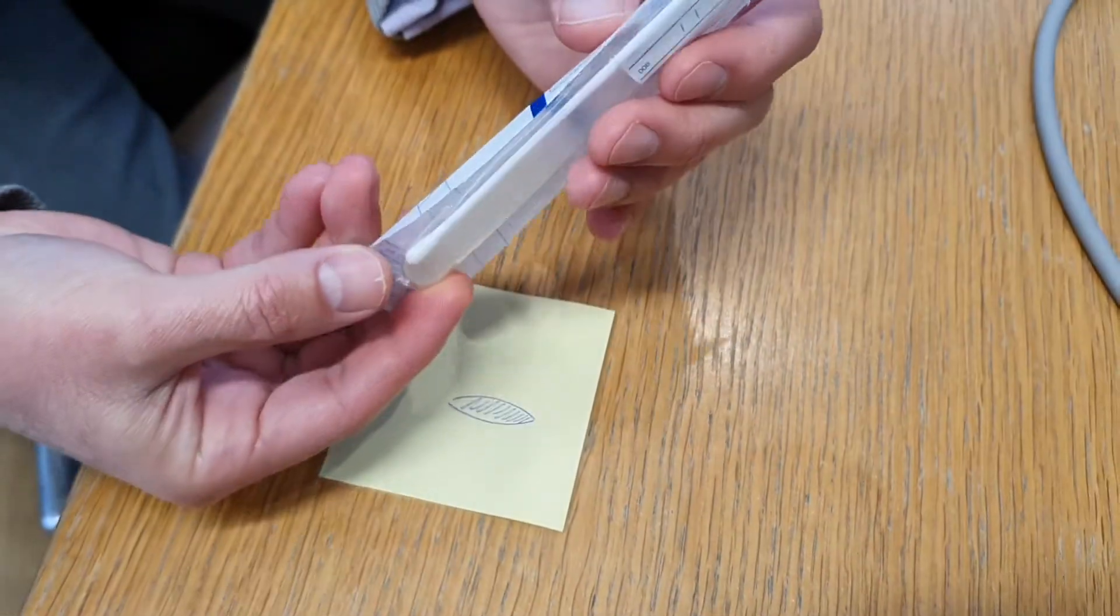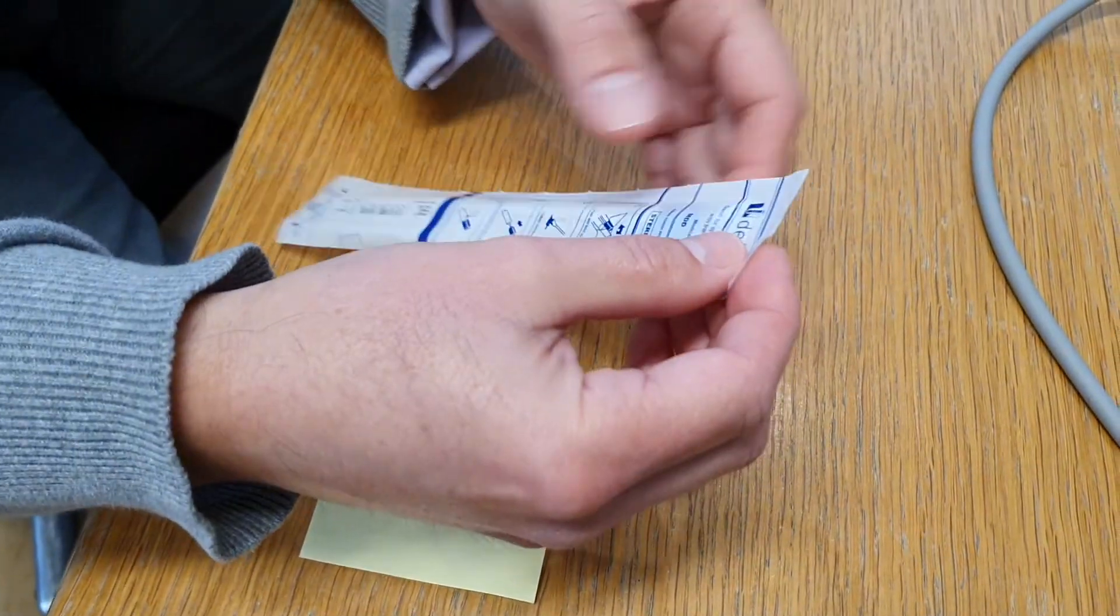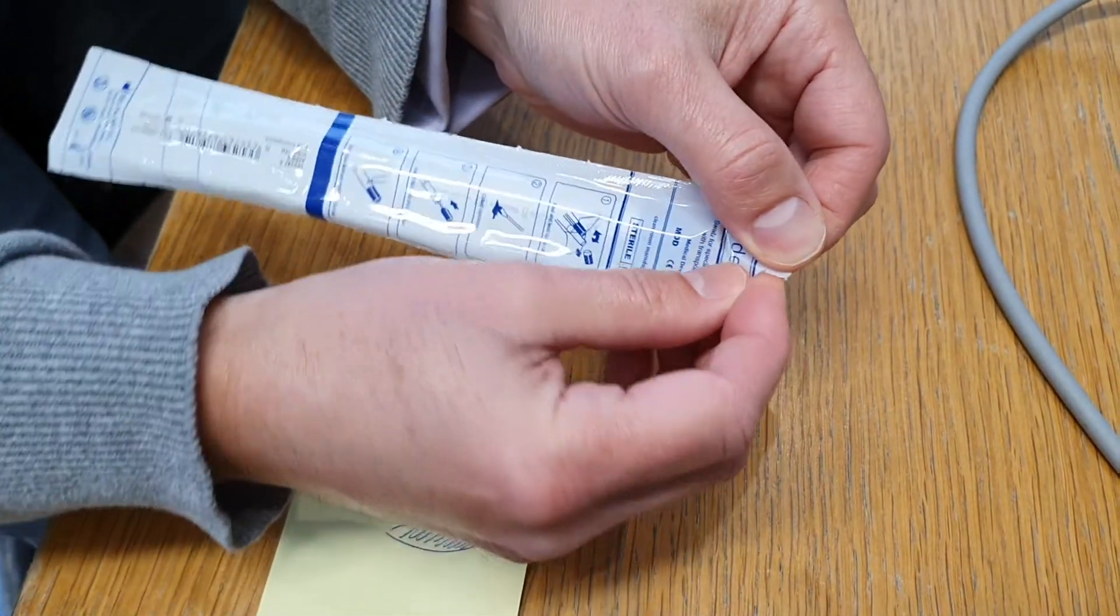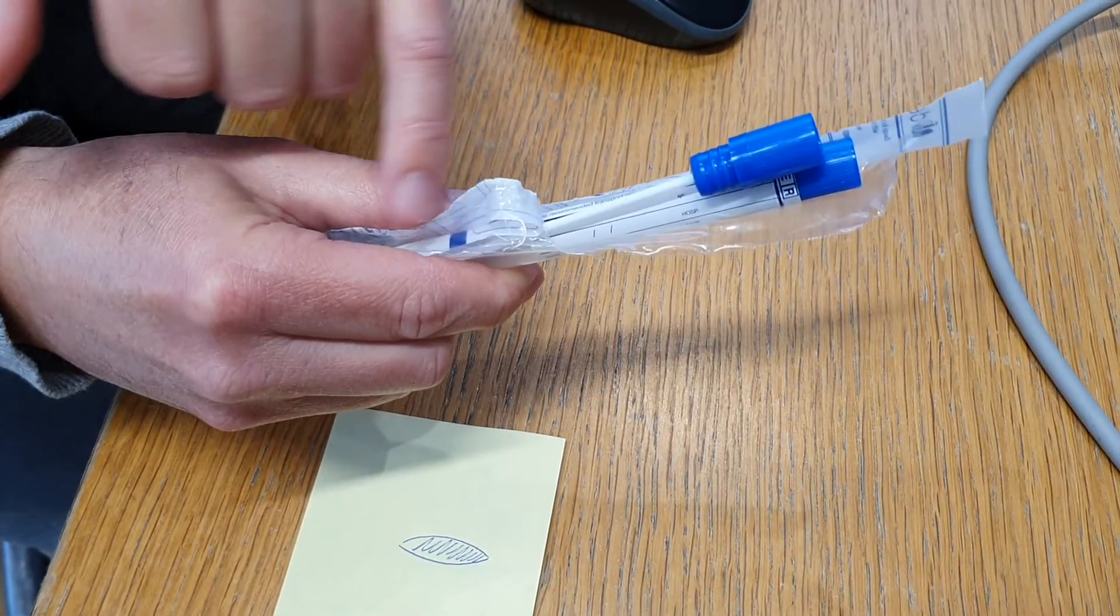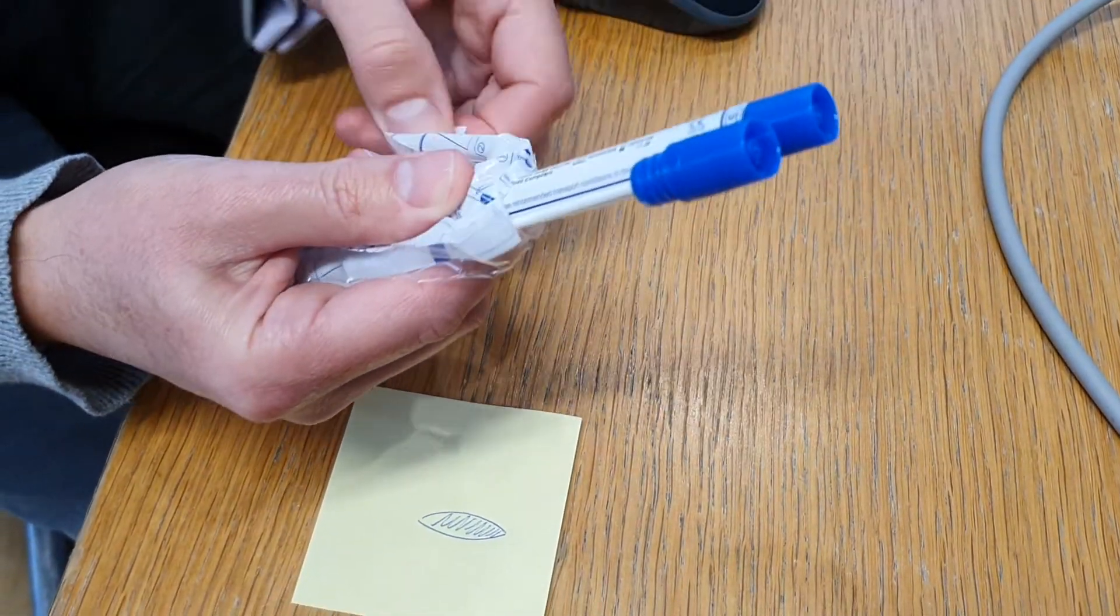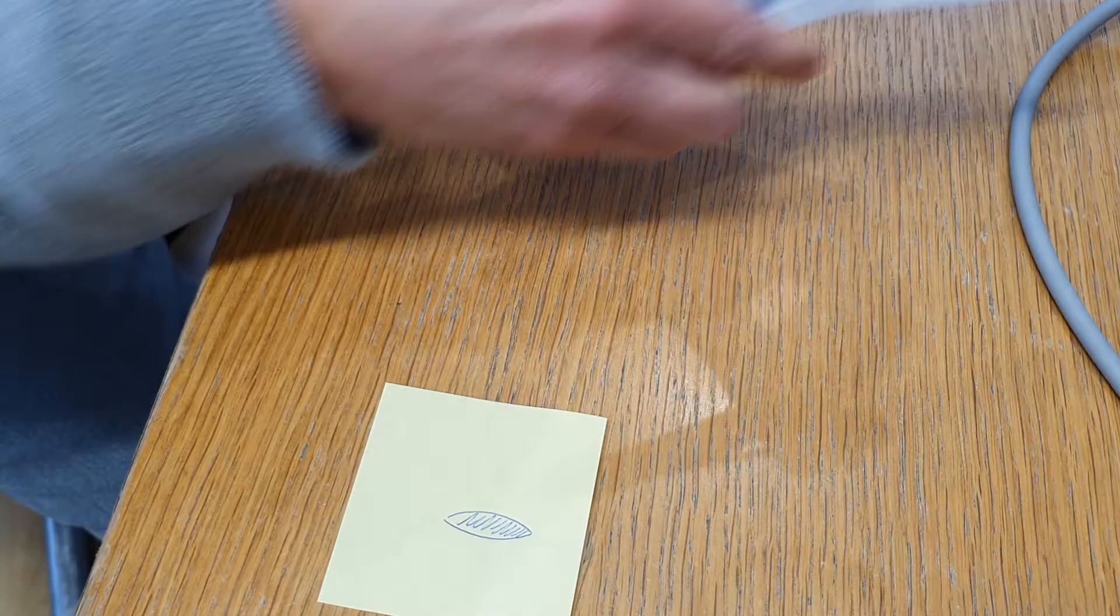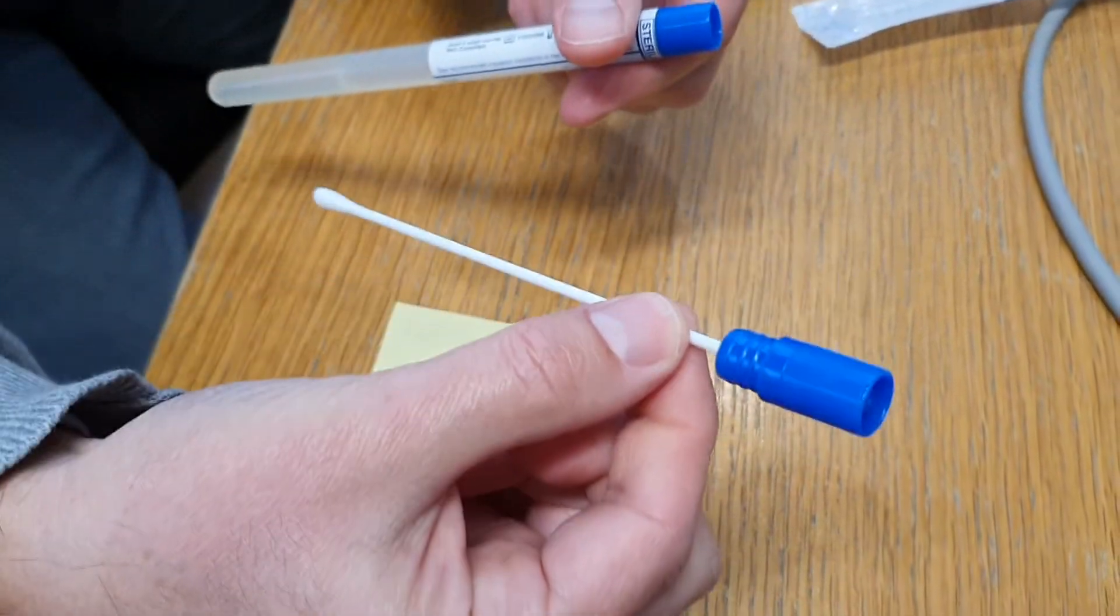Open the swab carefully with the perforation at the top, and carefully without touching the tip of the swab, take out both the culture medium tube and the swab.